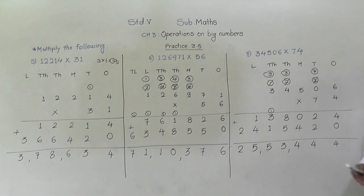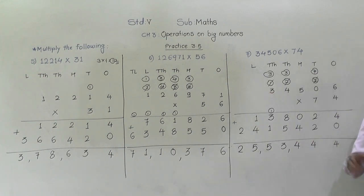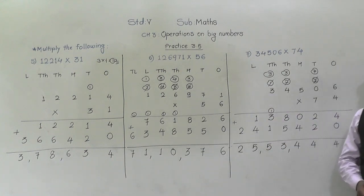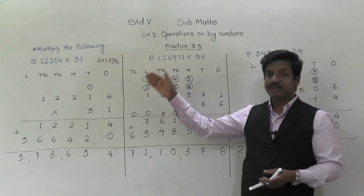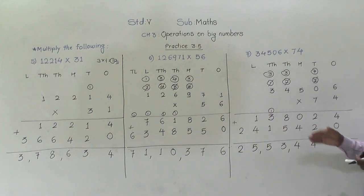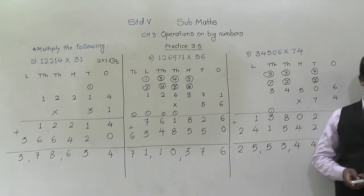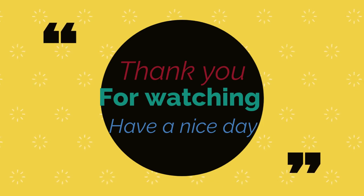So in today's lecture, we have seen two methods of multiplication. If we know the table of the number, then we can multiply directly by that number. If we don't know the table, we can multiply by each digit separately — that is what we have learned here. If you have any doubt, ask me on WhatsApp or in the comment section below. Thank you and have a nice day.